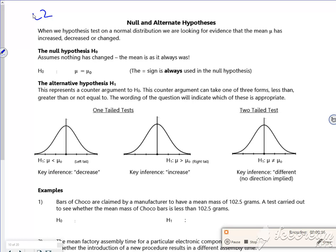When we test the hypothesis test with a normal distribution, we're looking for evidence that the mean has changed. What you want to see is if the mean is far enough away - if your sample average, your sample mean, is far enough away from what it should be to cause a problem.